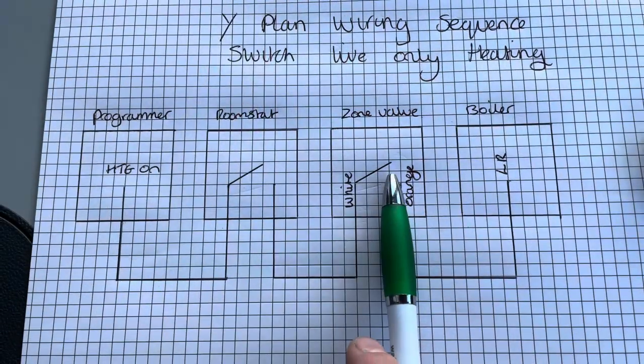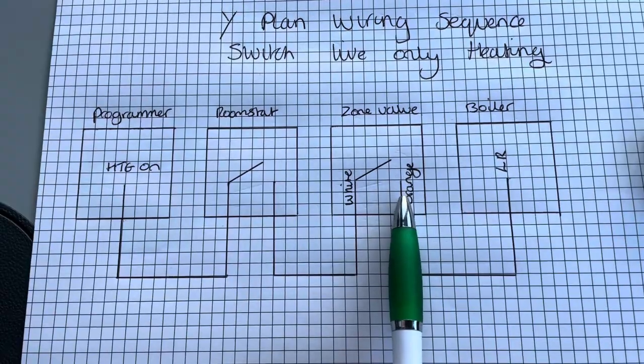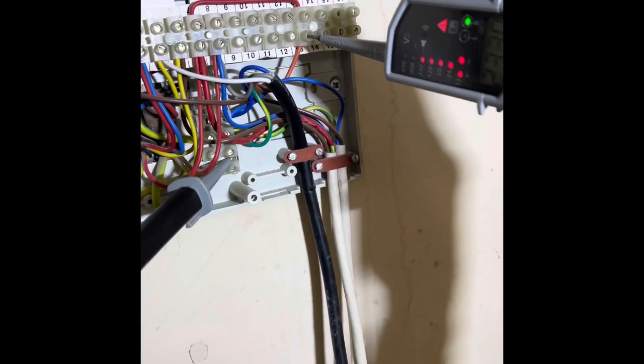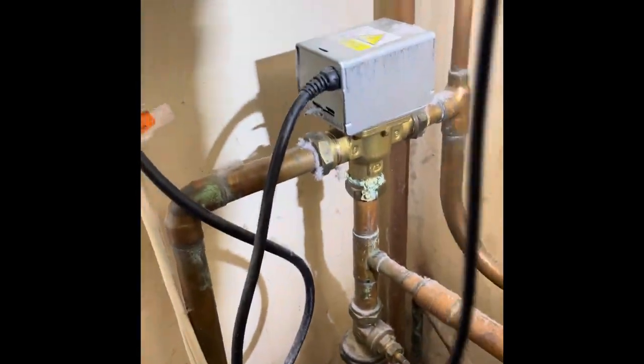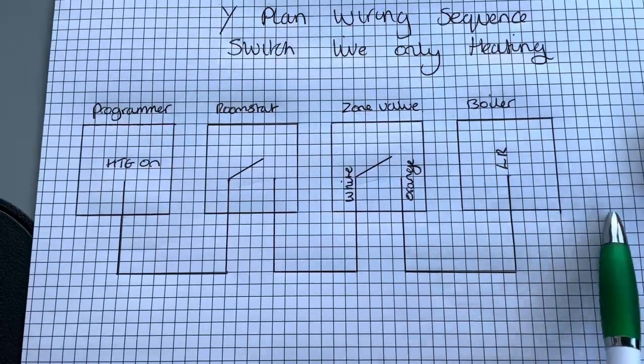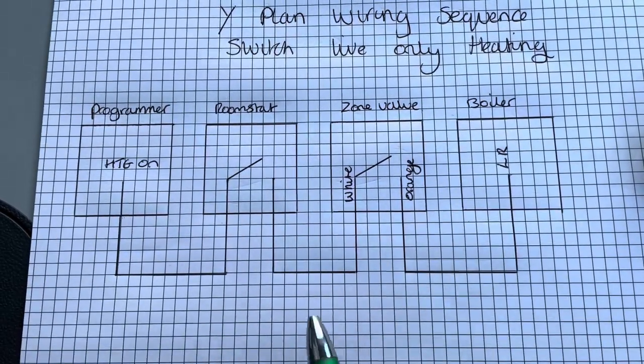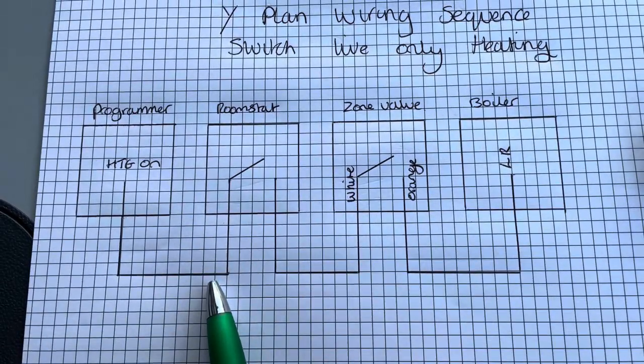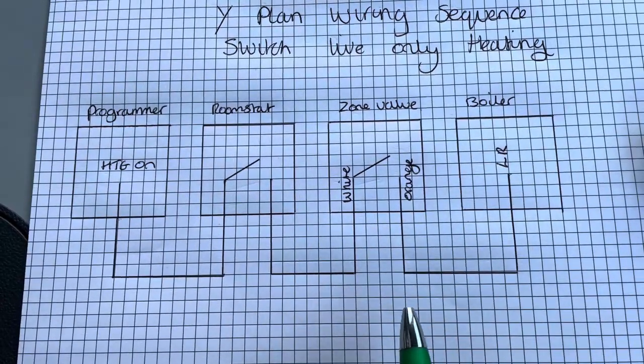That motor should motor over, click the micro switch, goes back on your orange. And then it fires your boiler and your pump. I haven't drawn your pump. So this is a real simple version of it.